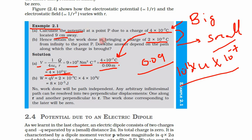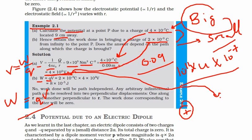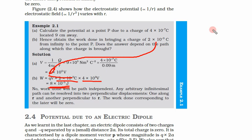Now for work done: potential V = W/q, so work done W = q × V. Here the small charge q = 2 × 10⁻⁹ C and V = 4 × 10⁴ V. Therefore W = 2 × 10⁻⁹ × 4 × 10⁴ = 8 × 10⁻⁵ joules.